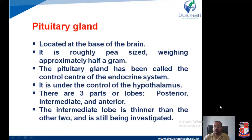The pituitary gland is located at the base of the brain. It is roughly pea-sized, weighing approximately half a gram. The pituitary gland has been called the control center of the endocrine system and is under the control of the hypothalamus. There are three parts of the pituitary gland: first, posterior; second, intermediate; and third, anterior. The intermediate lobe is thinner than the other two and is still being investigated, so we will discuss the posterior and anterior pituitary gland and their secretions.